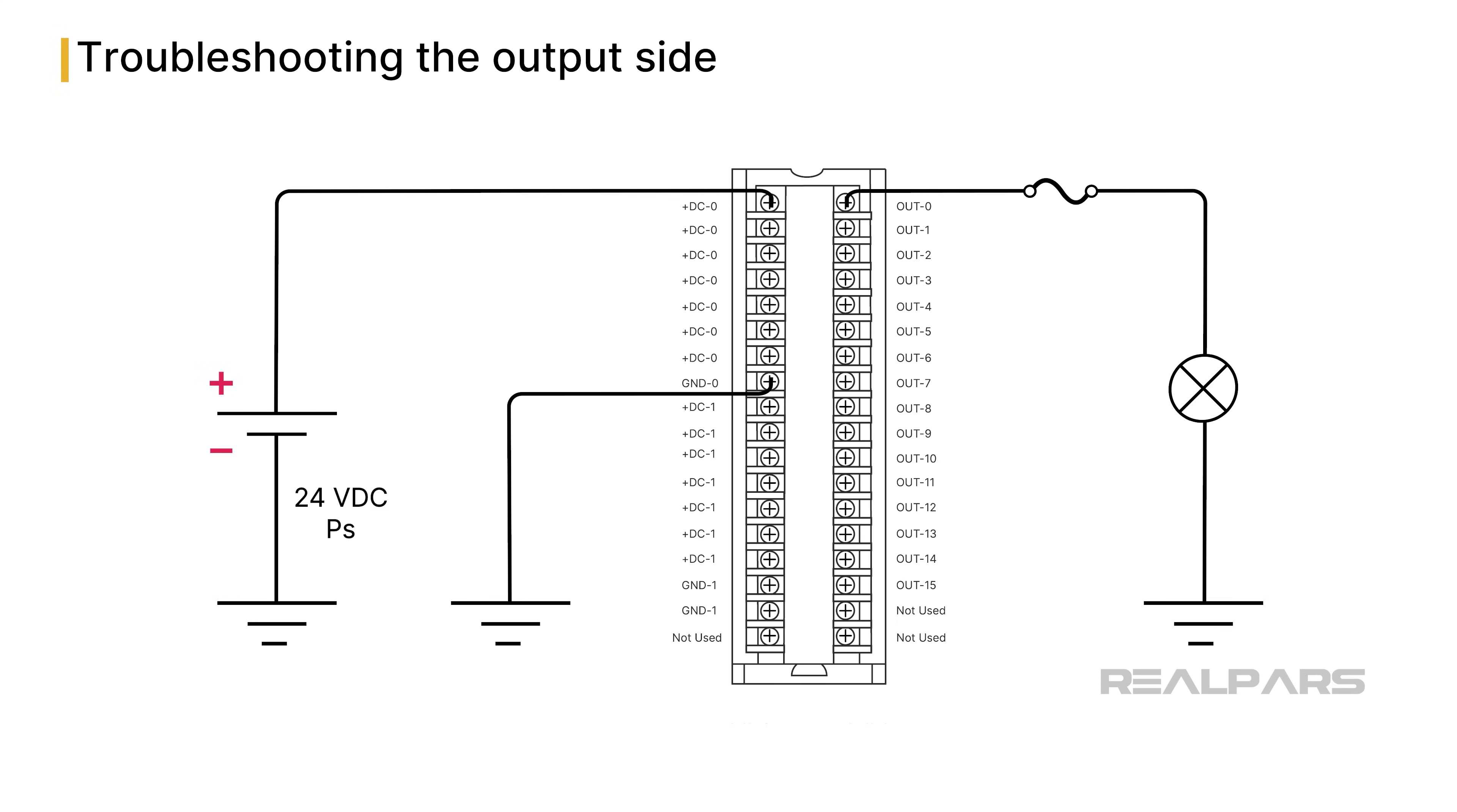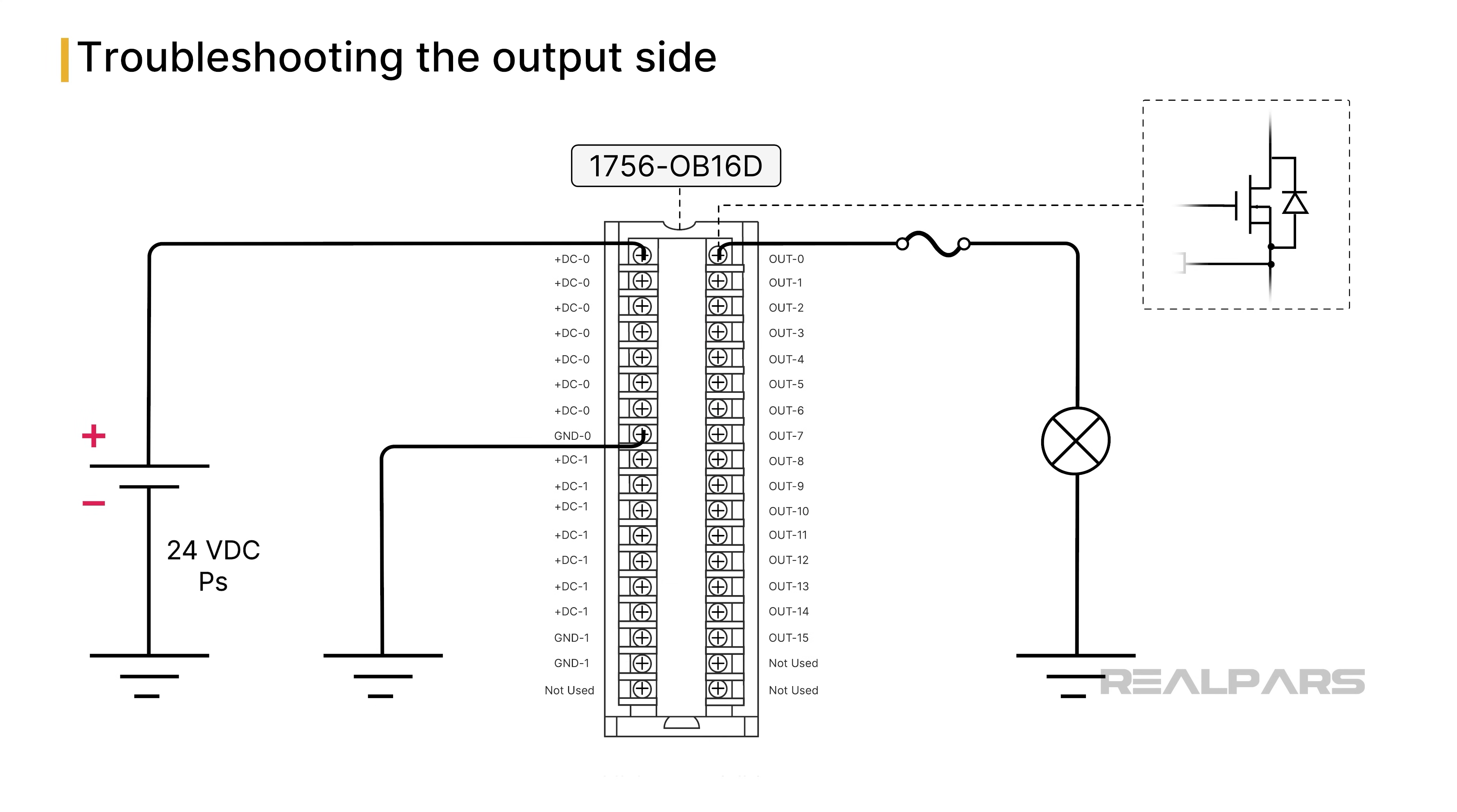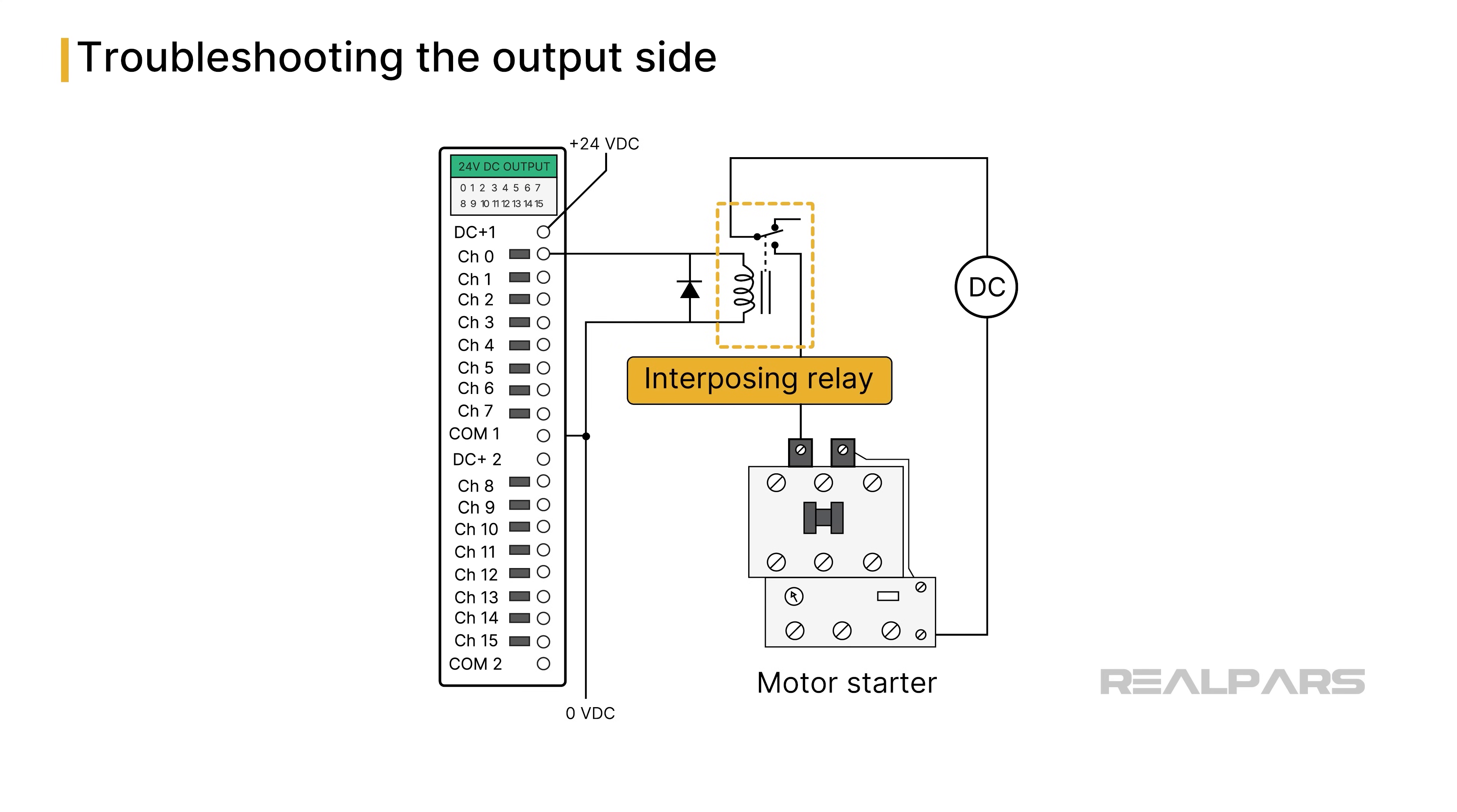Okay, let's move on to the PLC's output side. We will connect a lamp to the output of an Allen-Bradley 1756-OB16D digital sourcing output module. A fuse protects the module from overload. This output module type has a semiconductor output switch and can only handle a low current up to a maximum of 2 amps. An interposing relay is often used to operate high current loads such as motors.